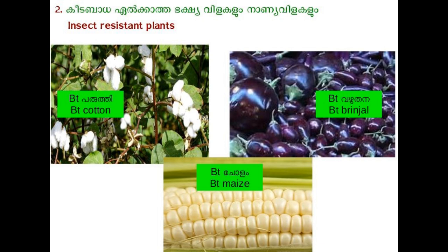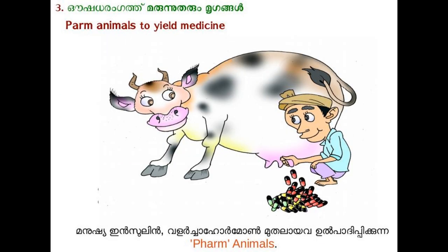Genetically modified organisms, especially microorganisms and farm animals, provide us with various proteins like insulin, the growth hormone somatotropin, interferons against viral diseases, the painkiller endomorphine, and antibiotics against bacterial infection.